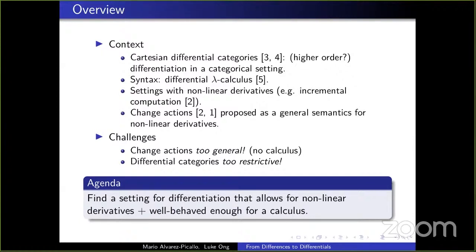The problem with our original setting of change actions was that it was much too general — we relaxed the conditions of the differential operator far too much. This work aims to present so-called cartesian difference categories and show how they still generalize cartesian differential categories, but have enough structure that one can construct a reasonably well-behaved calculus with interesting purely syntactic properties.